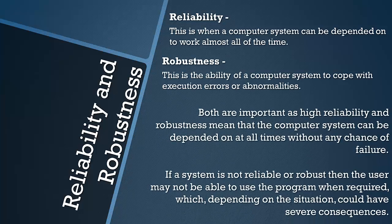You also need to understand why both reliability and robustness are important to a system. They both contribute to the user being able to depend on the system at all times without any chance of failure. There's always a small chance of failure, but it's minimal if systems are highly reliable and robust, which means that data, personal details, and your files aren't lost often — which is very important.